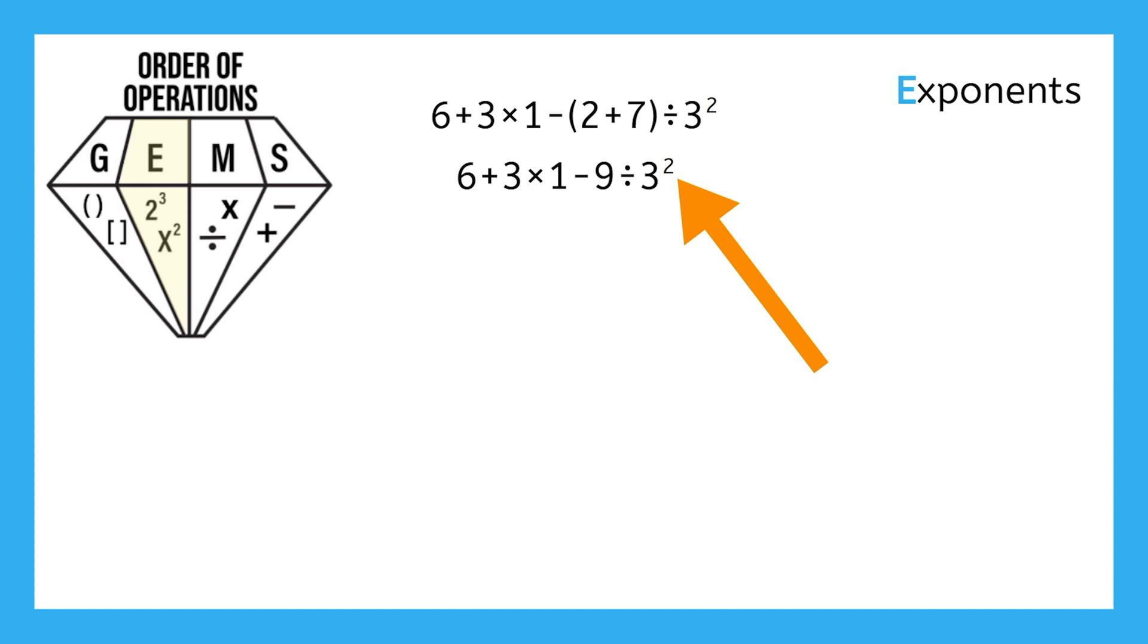Exponents represent repeated multiplication. So, three to the power of two, or three squared, means to multiply three times three. That equals nine. Bring down the rest of your expression, and with exponents out of the way, we are ready to move on to M for multiplication and division.